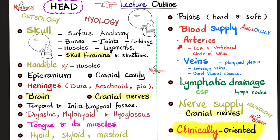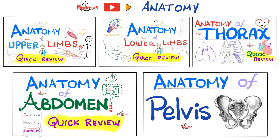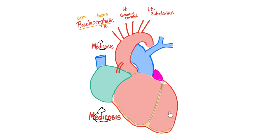Today we'll talk about the arterial supply of the head and neck — the carotids. For the full discussion on the anatomy of the head and neck, please refer to my anatomy playlist or to my 'In 90 Minutes Quick Review' playlist. Today we'll also cover the thyroid arteries. I'll cover the subclavian artery with its three parts in the next video, and the video after that will be about the maxillary artery. We do this every time because repetition is the mother of pedagogy.